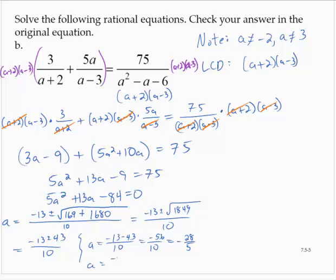Or a is equal to negative 13 plus 43 over 10, and that is 30 over 10, which is 3.